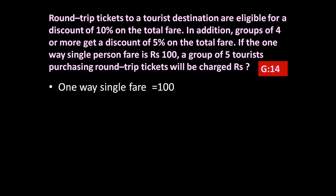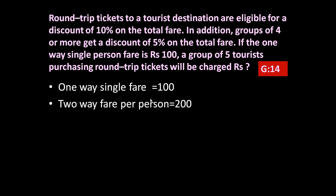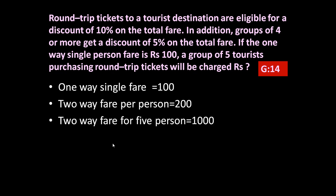To answer this question, let us go step by step. Step one: one-way single fare is equal to rupees 100. So the two-way fare per person is rupees 200. In addition, a group of four or more gets a 5 percent discount. This group consists of five tourists purchasing round trip tickets.